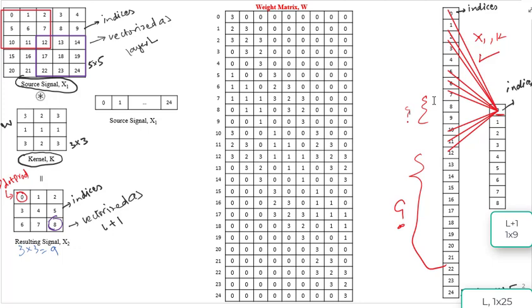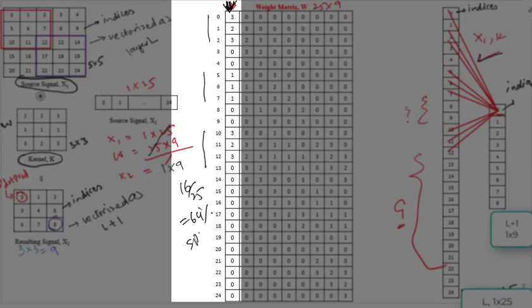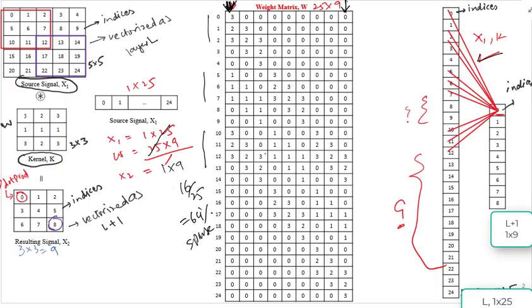Let's see how this is represented in the weight matrix W. The size of W is 25 by 9. So when x, which is 1 by 25, gets multiplied with W, which is 25 by 9, we get x2, which is 1 by 9. Now the connections in the red color are represented by the first column in W. What do we observe? The first column has a size of 25. However, only 9 elements belong to kernel K. The rest of the elements are 0. So this column has 16 by 25 sparsity which is 64%.